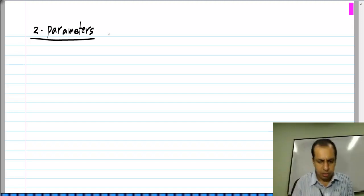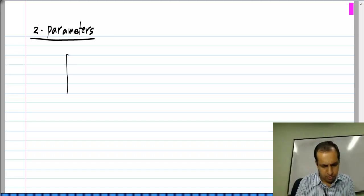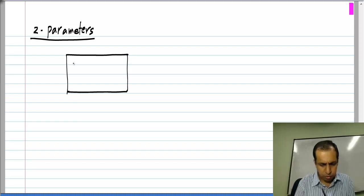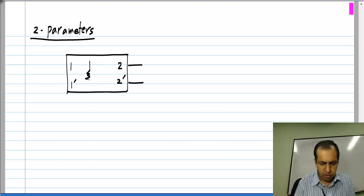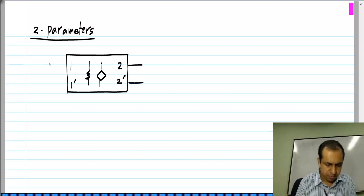And in case of Z parameters, let us say we have a two port. Naturally, this can contain all linear elements, but no independent sources.